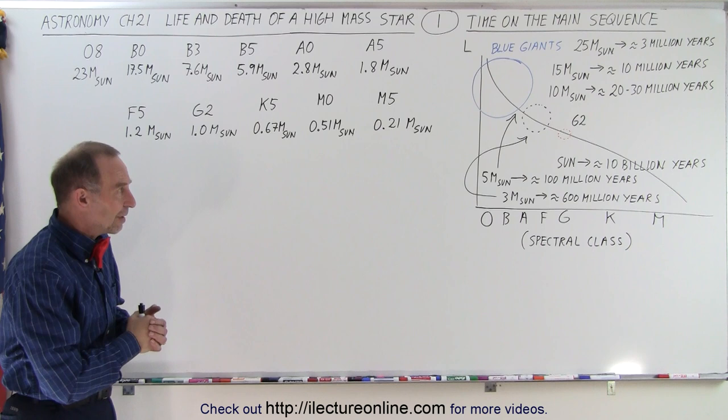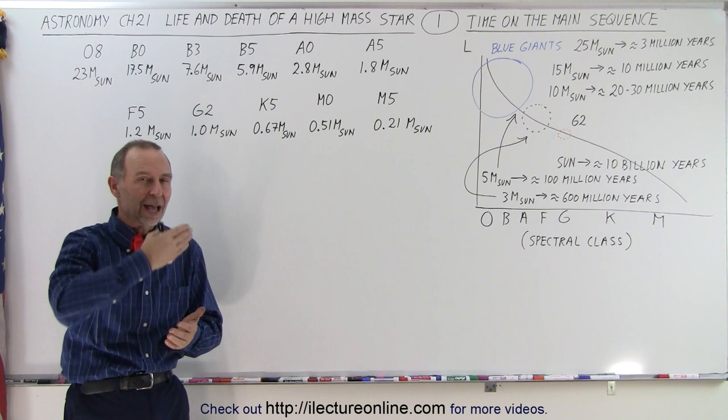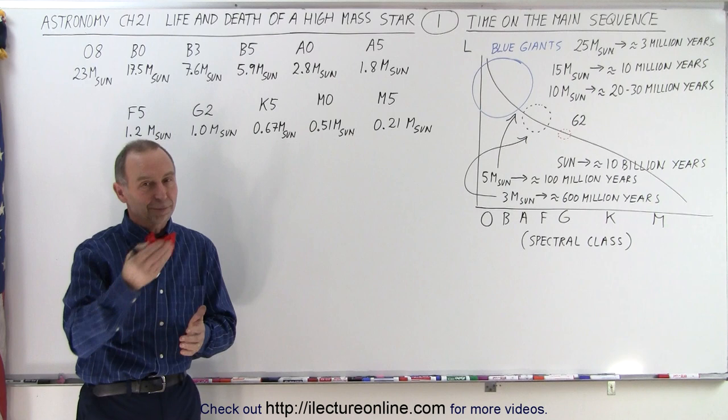So that gives you kind of an idea of how long these very large stars stay on the main sequence converting hydrogen to helium, and it gives you a better idea of what we mean by spectral class and how they classify the various class stars relative to their masses, and that is how it's done.